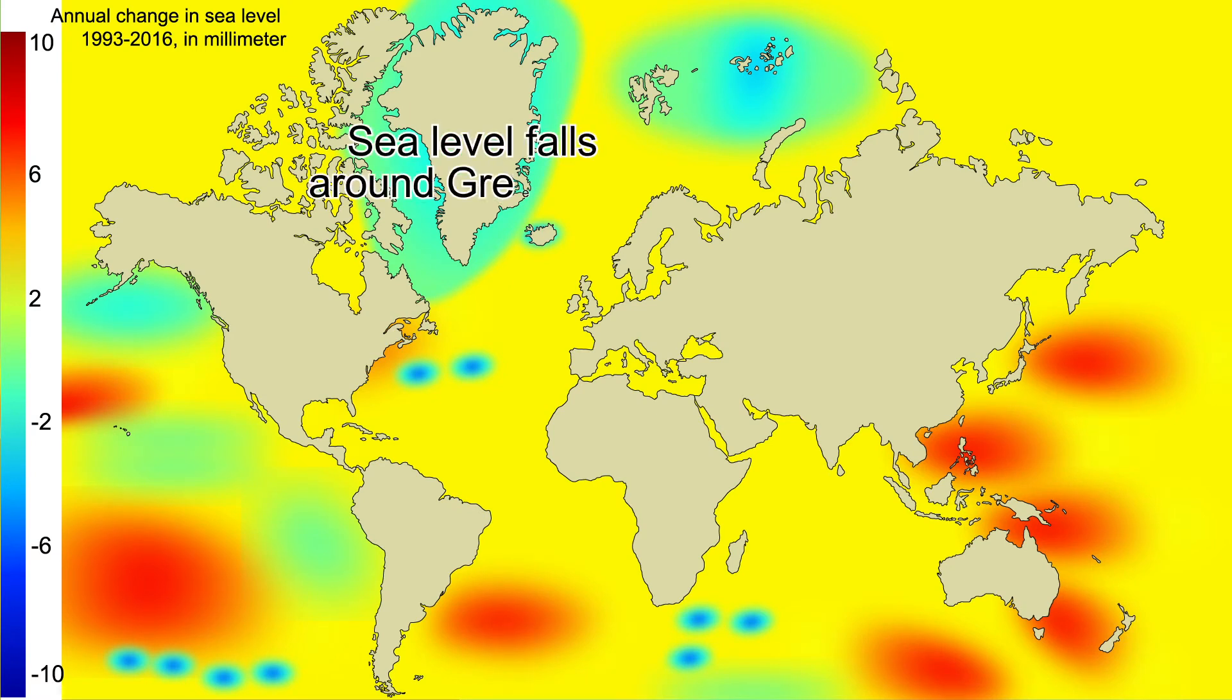For the Netherlands, if the Greenland ice sheet melts, the sea level on the coast will rise by less than seven meters because the Netherlands is relatively close to Greenland.